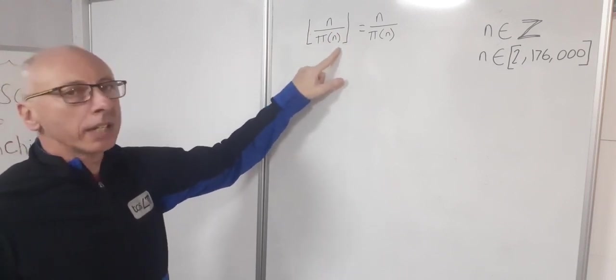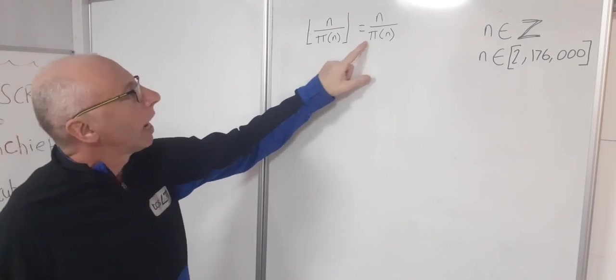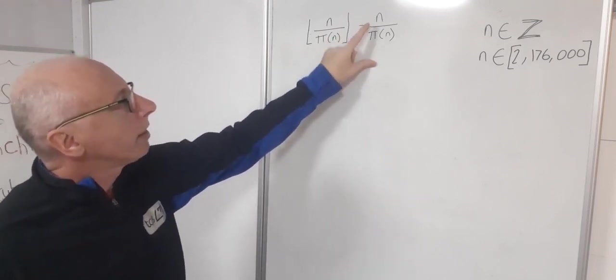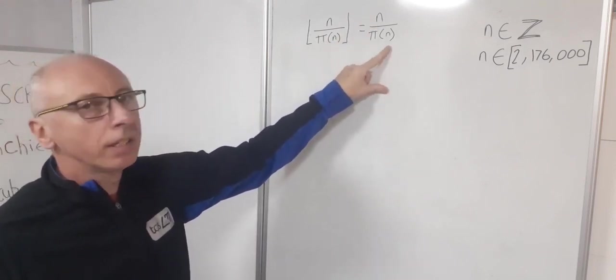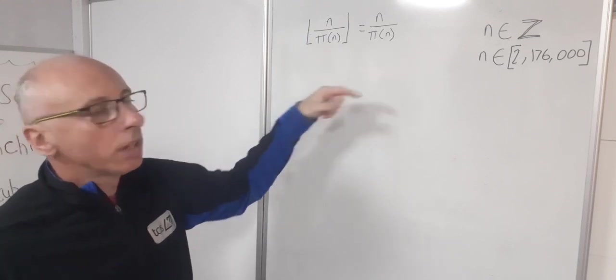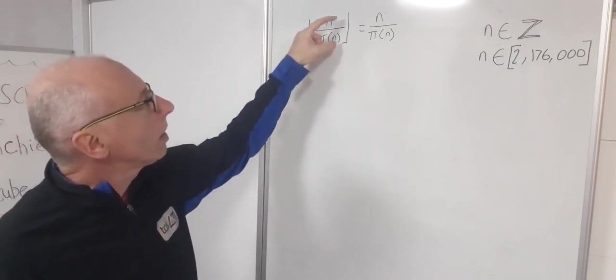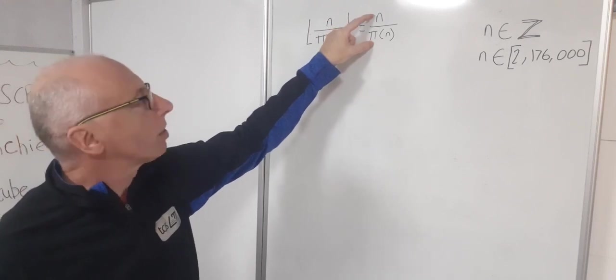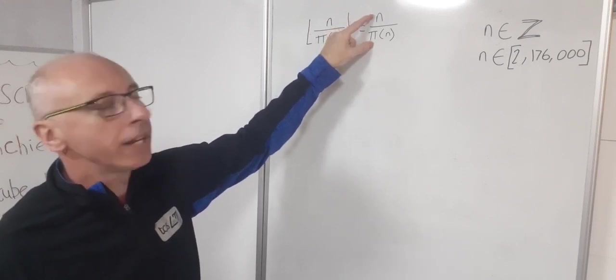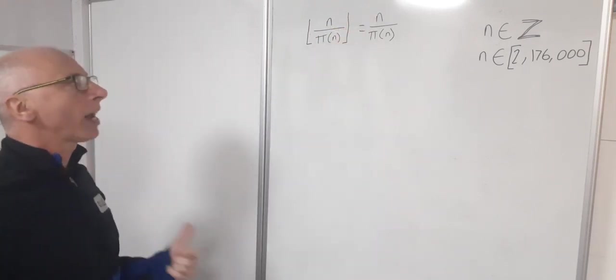So we're taking the integer value of this and then where it equals n over pi of n without the floor function. So basically what we're looking for is when this calculation here gives us an exact number, so an integer. So we're not looking for any fractions.